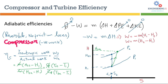Adiabatic efficiency can be deduced using the first law of thermodynamics, which states that heat input minus work done equals the mass flow rate times the change in enthalpy, plus the change in potential energy, plus the change in kinetic energy.